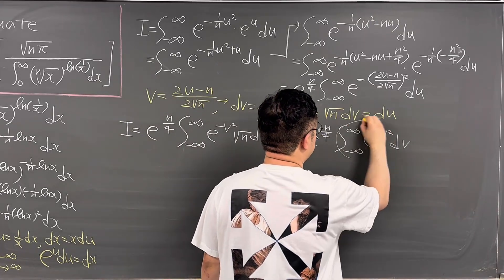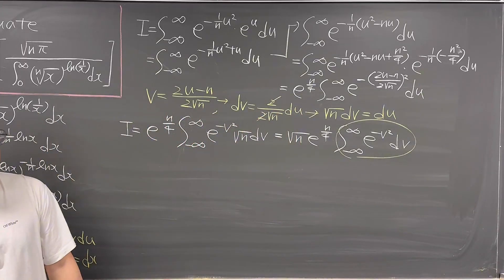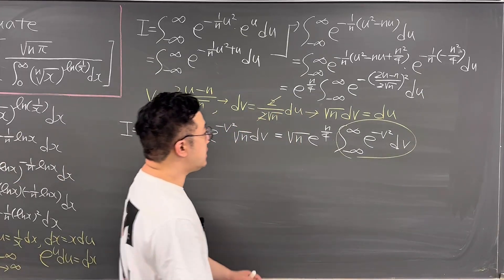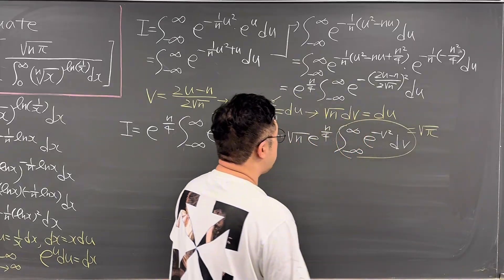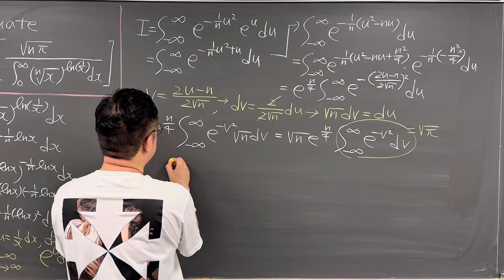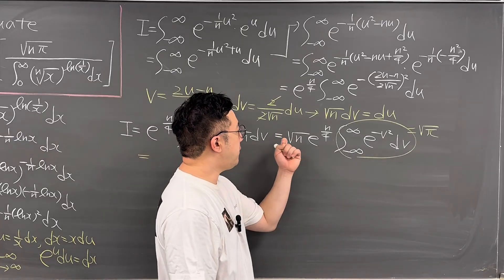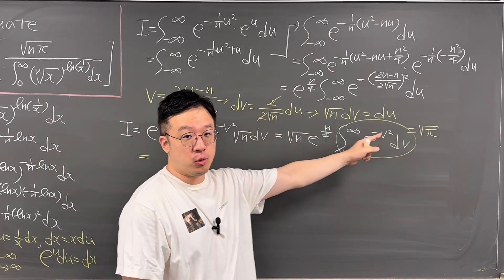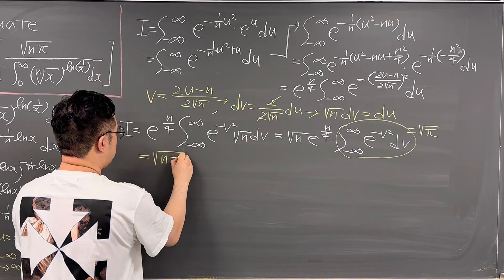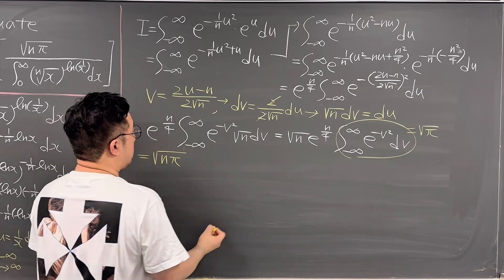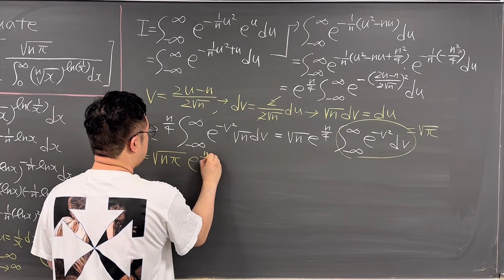This integral from negative infinity to infinity of e to the power of negative v squared dv is the Gaussian integral, which has the value of square root of pi. So I equals square root of n times square root of pi, which is square root of n*pi, times e to the power of n/4.